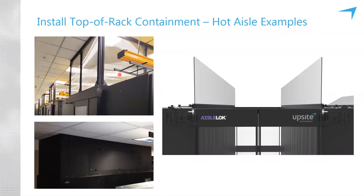So hot aisle containment can be rigid or flexible. If you don't have a ceiling return plenum but do have a high ceiling, hot aisle containment is still an option. In that scenario, you raise the top of the hot aisle containment up from the racks to whatever height the jurisdiction requires — typically 18 inches from a sprinkler head. You would similarly raise the air conditioning unit's intake up, without coupling it to a drop ceiling.